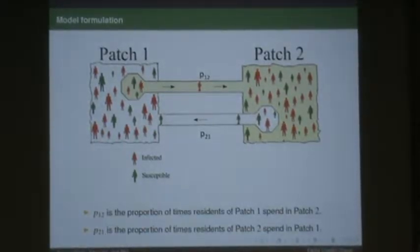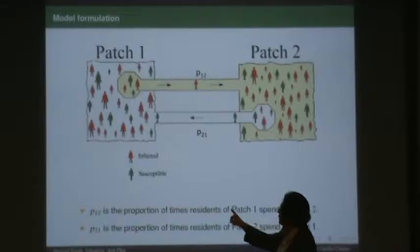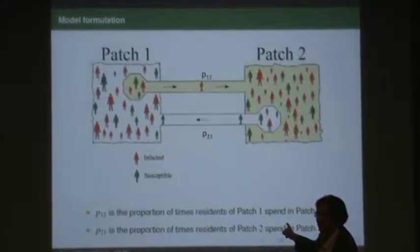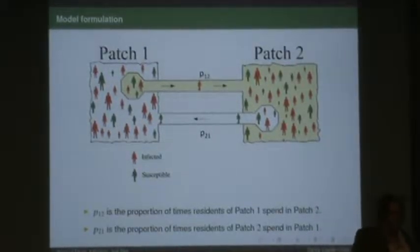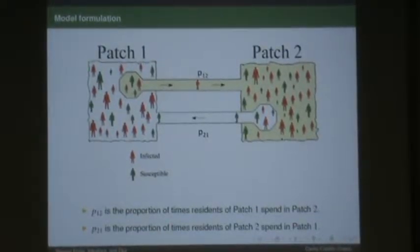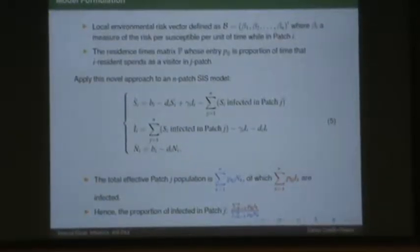Well, for each individual, this is P12 is the proportion of times that residents of patch 1 spend in patch 2. The other one is patch 2 spend in patch 1, and the others are the obvious. So we use residence times matrices, and we can write differential equations.